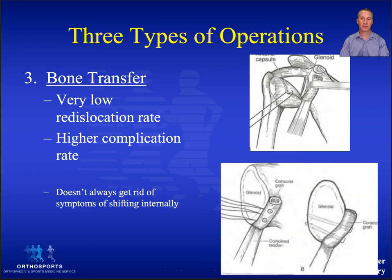Once the patient has significant bone loss and an off-track lesion, a bone transfer operation is the only solution. This is a wonderful operation with very high satisfaction rates. However, studies are showing that reabsorption of the coracoid bone graft will occur if there wasn't any bone loss initially.